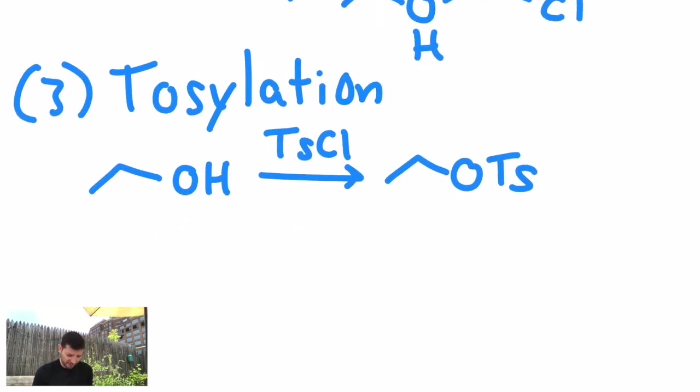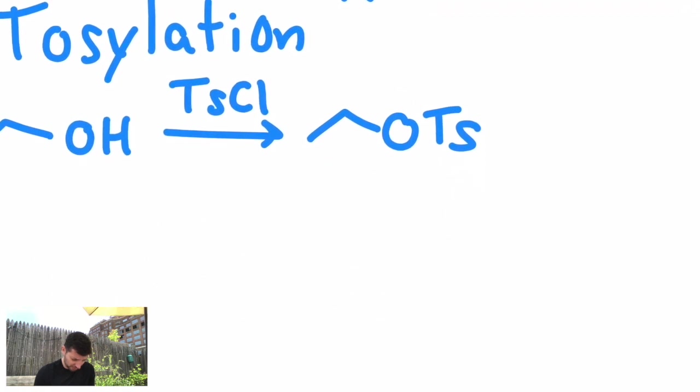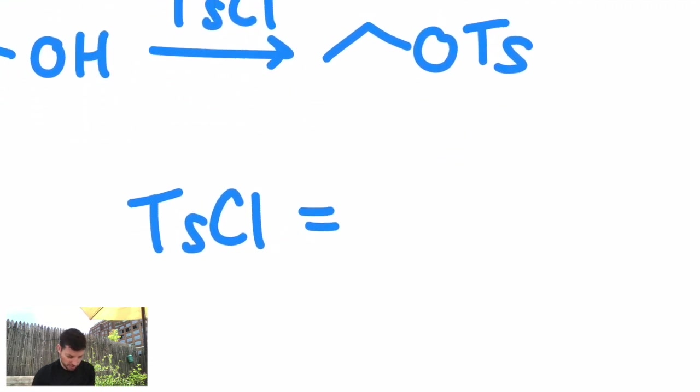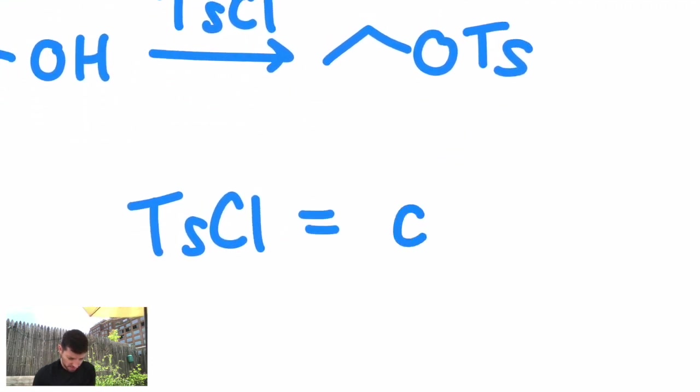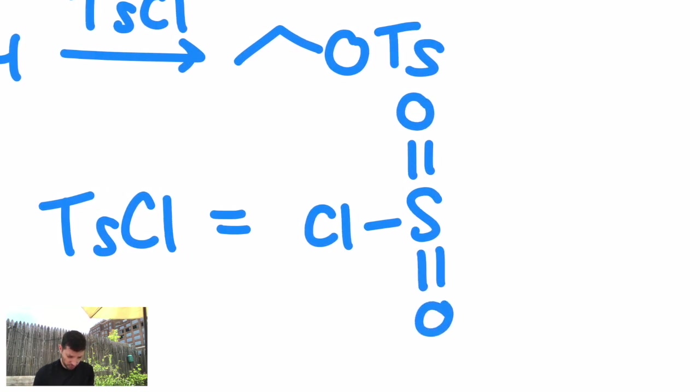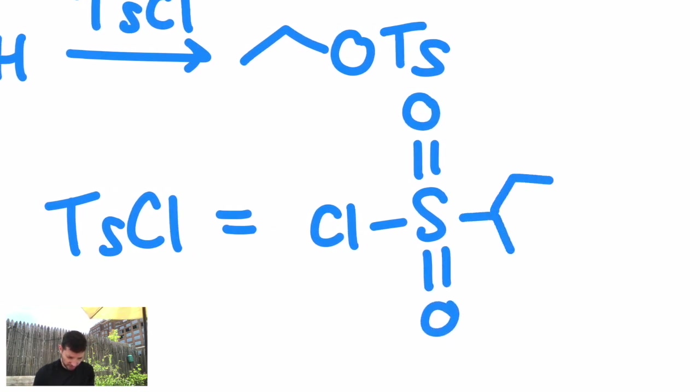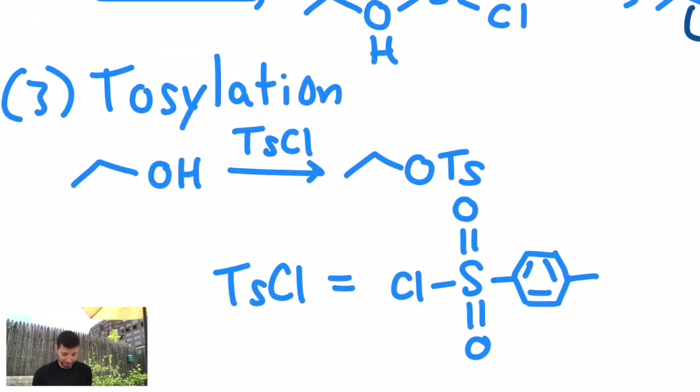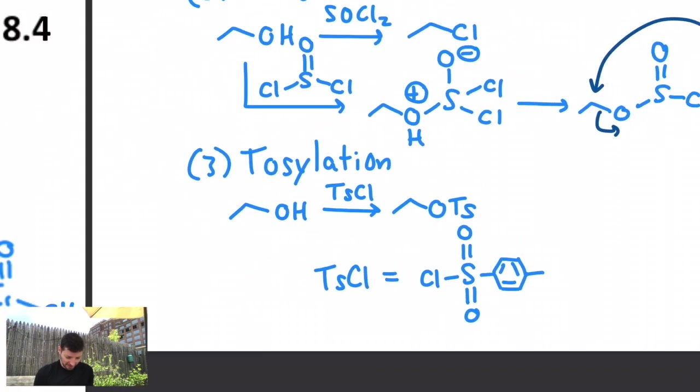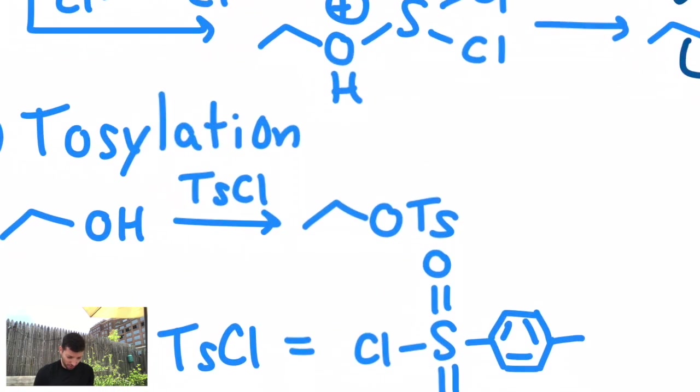The reagent's tosyl chloride, I'll show you, looks like this. It's actually a sulfone, with a toluene attached. Which looks like that. It does chemistry that's related to carboxylic acid derivatives, even though there's no carbon here, but sulfone chemistry. So, that's effectively how we turn any alcohol into a leaving group.